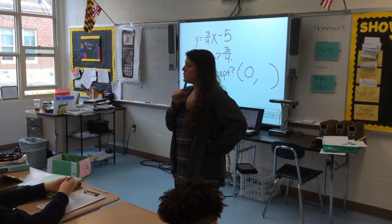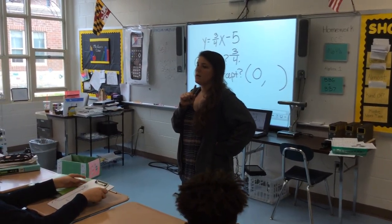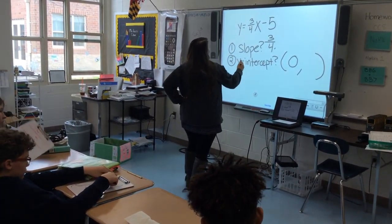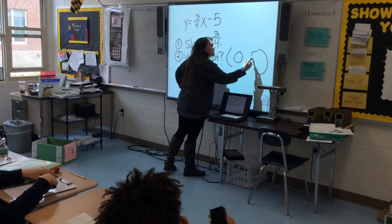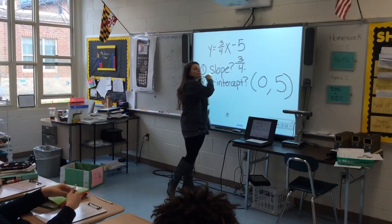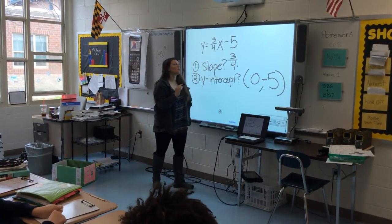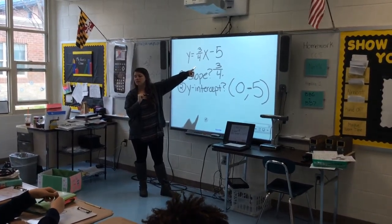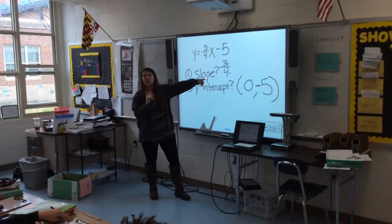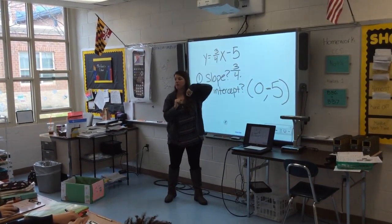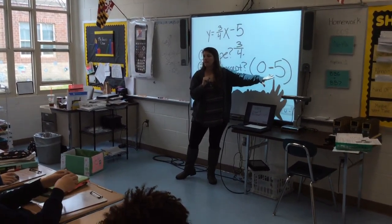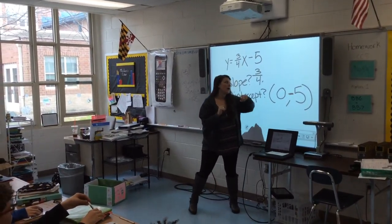Hold that up in three, two, one. All of us have the number five, which is good because we got it from the equation. A couple of us remembered that it has to be negative five because we're subtracting the B at the end. Everybody understand why that's a negative? If it's minus, it's a negative for our Y intercept. What does our Y intercept mean? What does this coordinate point tell us? Where it crosses the Y axis. Perfect.